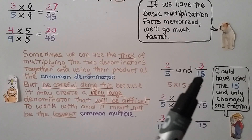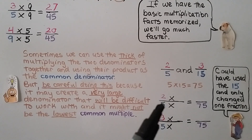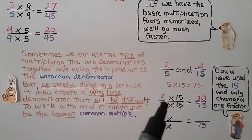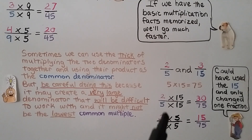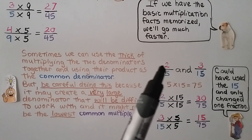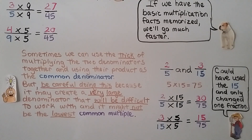Be careful using the denominator-multiplication trick, because it may create a very large denominator that's difficult to work with, and it might not be the lowest common multiple. For example, with two-fifths and three-fifteenths: multiplying 5 times 15 gives 75 as a common denominator. Five times fifteen equals 75, so two times 15 gives 30-seventy-fifths. Fifteen times five equals 75, so three times five gives 15-seventy-fifths. But we could have just used 15 as the common denominator and only changed one fraction. It's better to find the least common multiple and use that as the denominator.